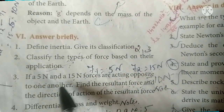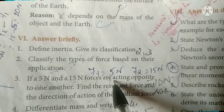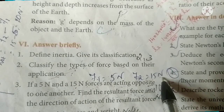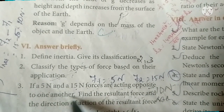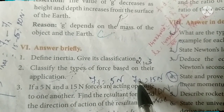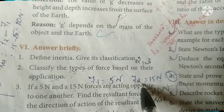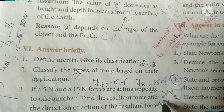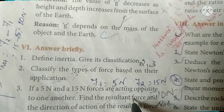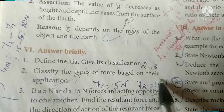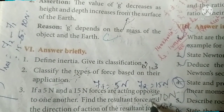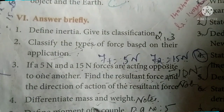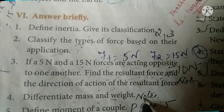Question three — numerical problem: F1 = 5 N and F2 = 15 N. The resultant force is F2 minus F1 = 15 − 5 = 10 N. The direction is along the direction of F2 because it is the greater force. Then differentiate mass and weight — notes already given.